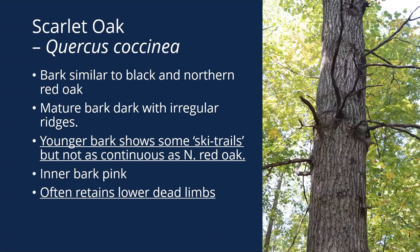The bark is fairly similar to black oak or northern red oak — kind of in between, with some ski trails but not as noticeable as northern red oak. If you dig in the inner bark, it's kind of pink like northern red oak. It often retains those lower dead limbs — that's a characteristic I usually key in on when identifying scarlet oak. So looking at habitat (dry sand or dry sites), holding on to those lower limbs, and those flat flattened acorns will really point you towards scarlet oak.